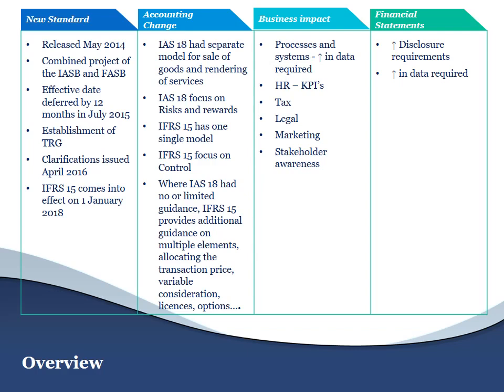As a bit of a refresher, IAS 18, together with all its interpretation guidance, for example IFRIC 13, as well as IAS 11 dealing with construction contracts, have been replaced by the new IFRS 15. IAS 18, if we think about how we used to think about recognizing revenue, there was a separate model for the sale of goods and a separate model for the rendering of services. IFRS 15 has now replaced both of these models with a single model, the five-step model.